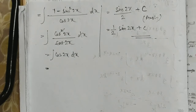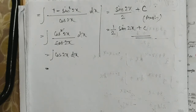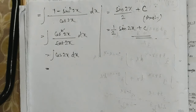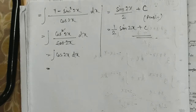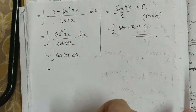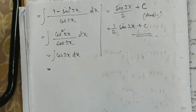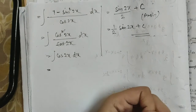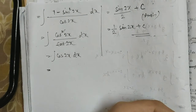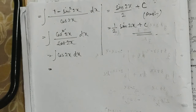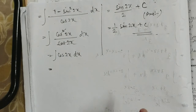Welcome to Flawless Mathematics. Today is the Indefinite Integral Part 6. I will tell you about this. The first thing we have done is e to the power x. We have done a to the power x, and we have done an arrangement.